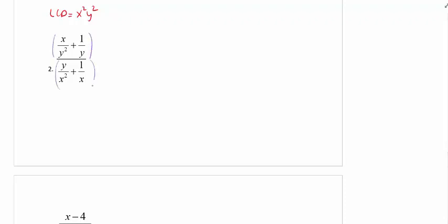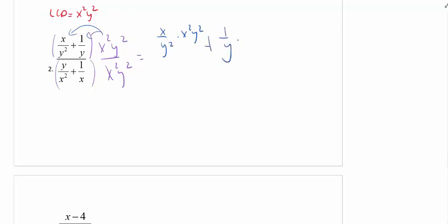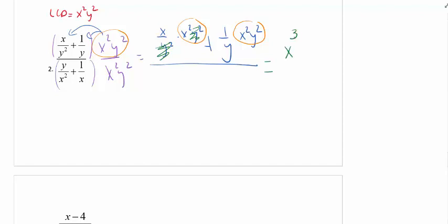We are multiplying the top and bottom by x squared y squared. I'm going to take an extra step here so you can see what I'm doing. I am distributing this x squared y squared to both terms on the top. The y squareds here cancel and I'm left with x times x squared, which gives me x cubed. One of the y's cancels here, so I'm left with x squared y on the top.